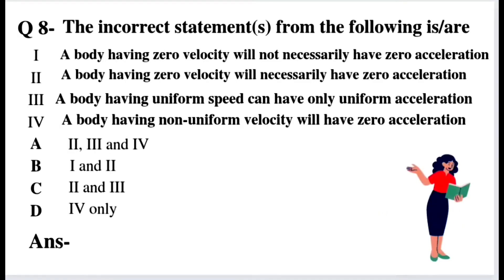Question number 8: find the incorrect statement from the following. Statement 1: a body having zero velocity will not necessarily have zero acceleration. Statement 2: a body having zero velocity will necessarily have zero acceleration. Statement 3: a body having uniform speed can have only uniform acceleration. Statement 4: a body having non-uniform velocity will have zero acceleration. Options — A: 2, 3 and 4. B: 1 and 2. C: 2 and 3. D: 4 only.